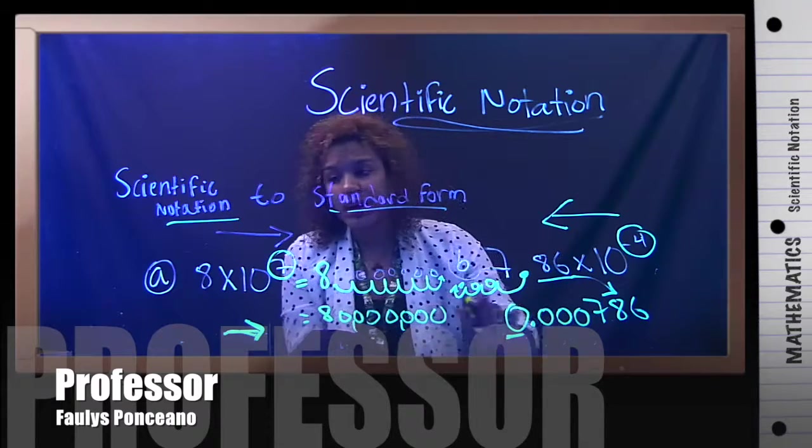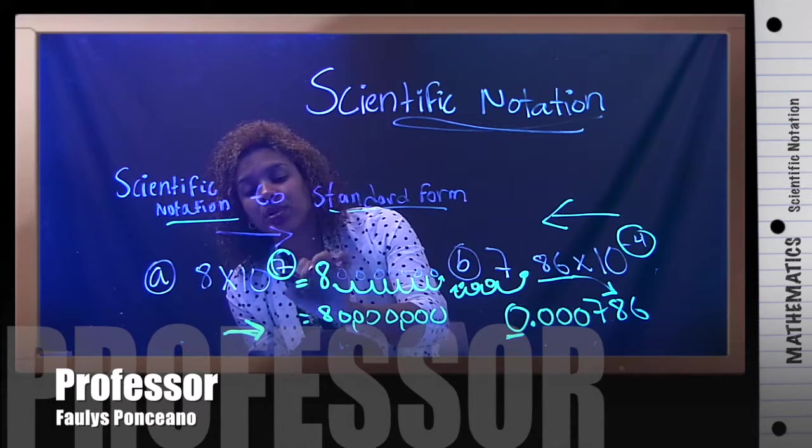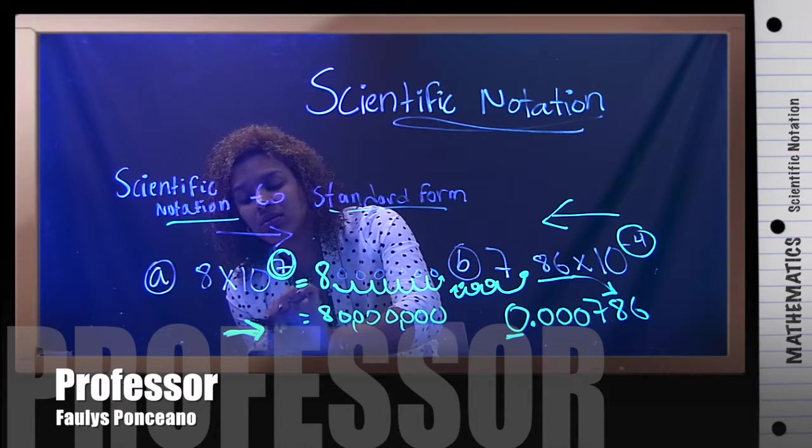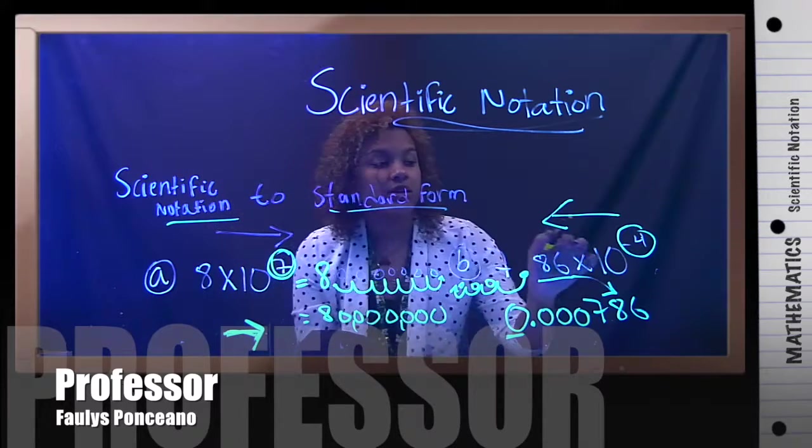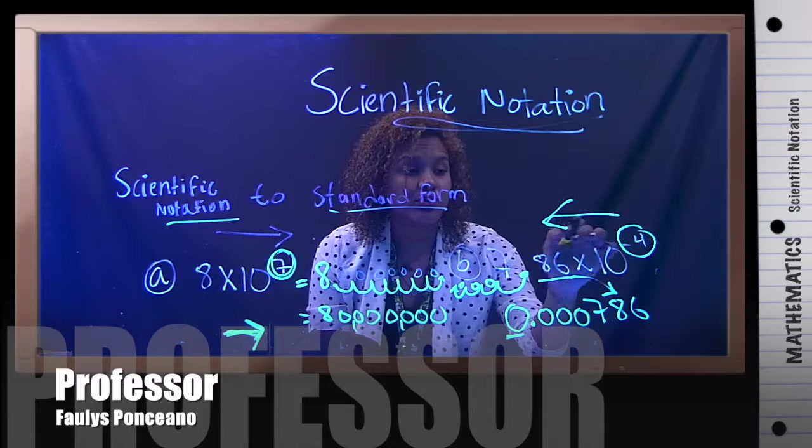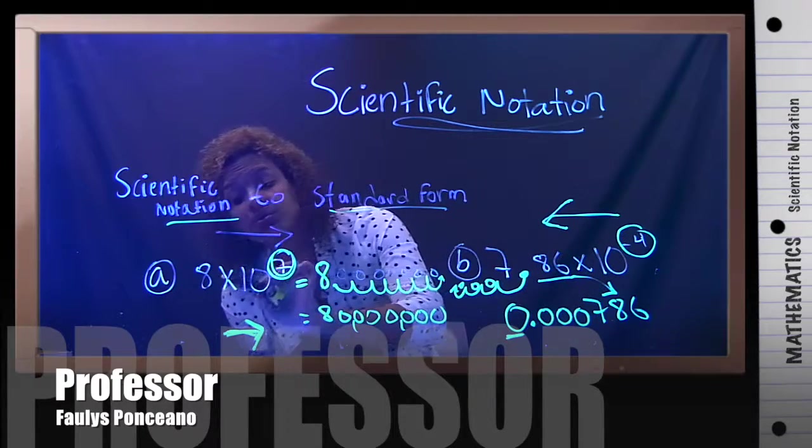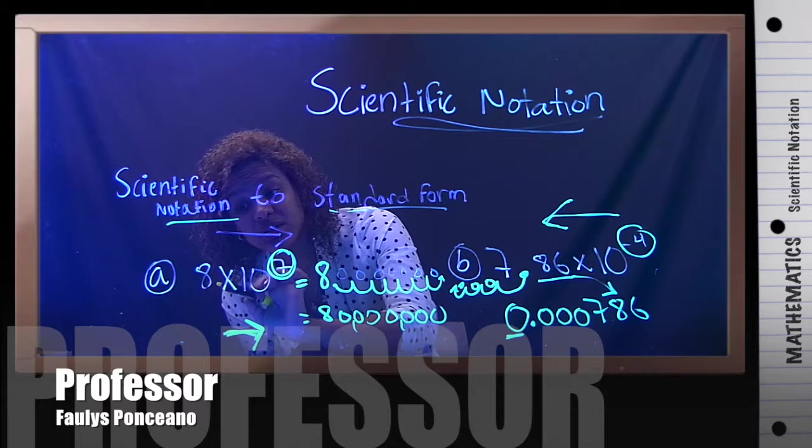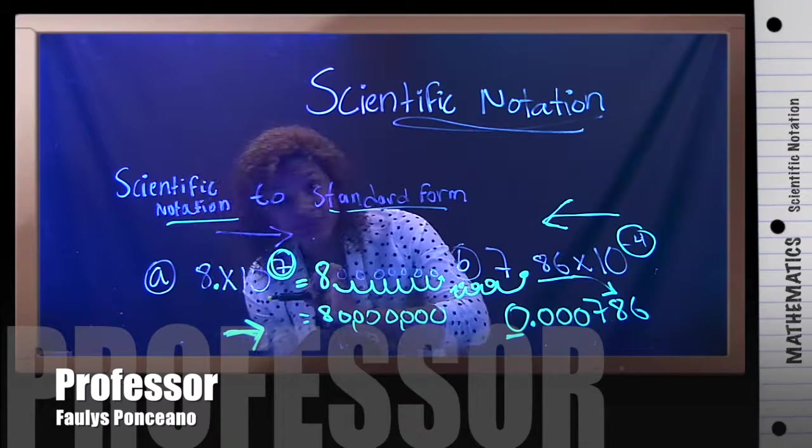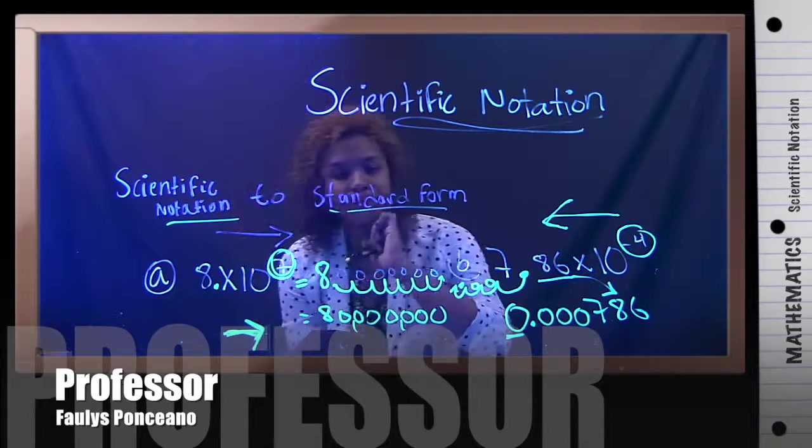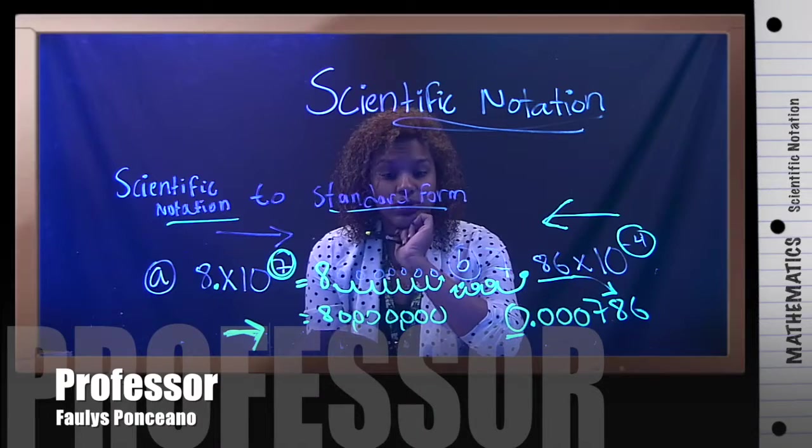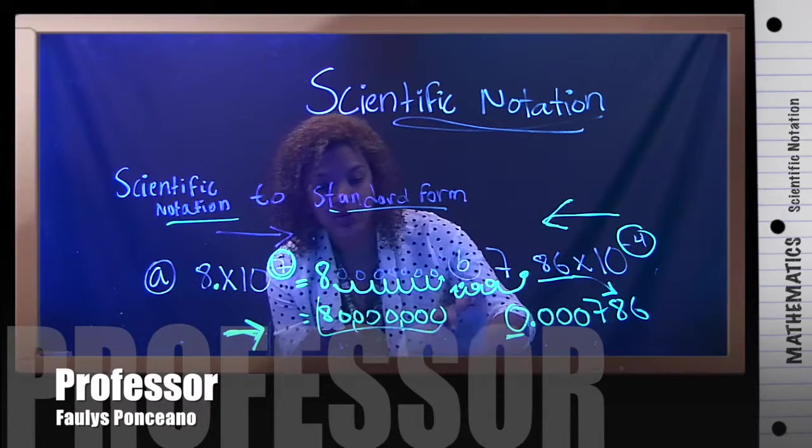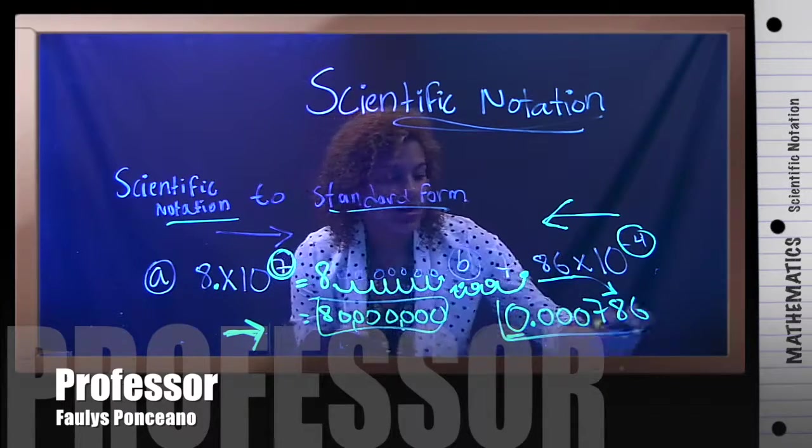Okay. So, recap. When the exponent is positive, we move to the right. When the exponent is negative, we move to the left. If you don't see the decimal, it's always in the end. Okay. So, those are your two answers. This right here and this right here.